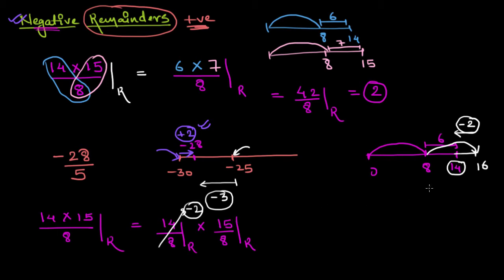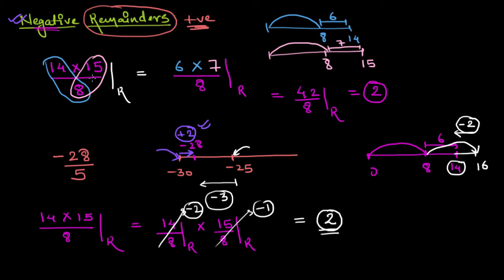Similarly for 15, I can reach 16 and subtract 1, giving me negative 1 as the remainder. So negative 2 multiplied by negative 1 will directly give me 2 as my remainder in a single step — which took much longer using the first method.